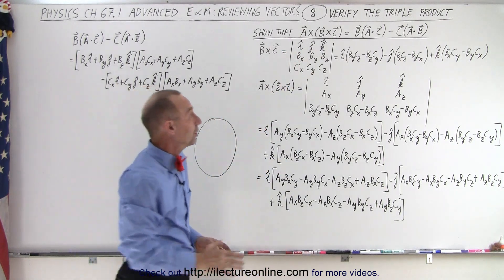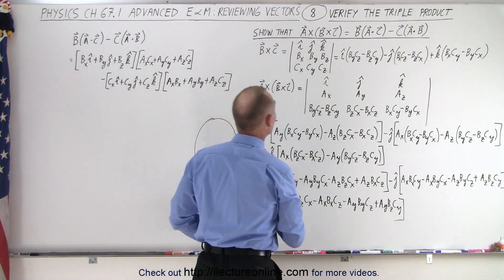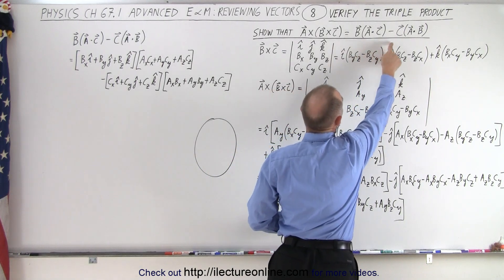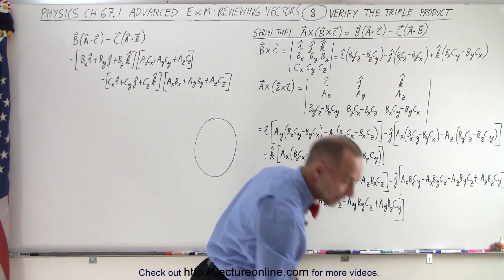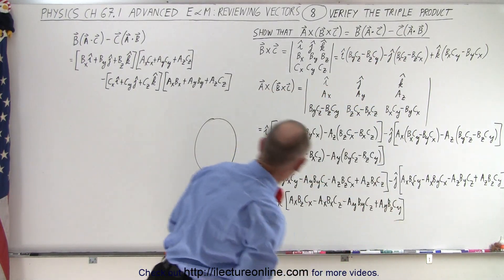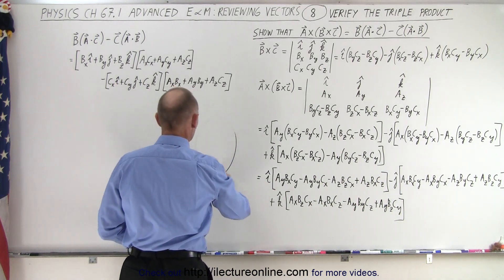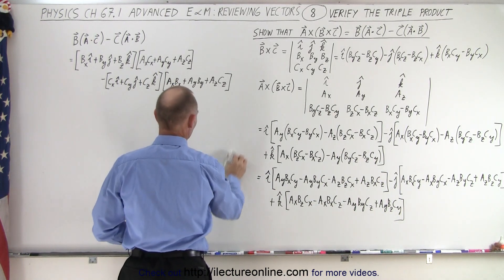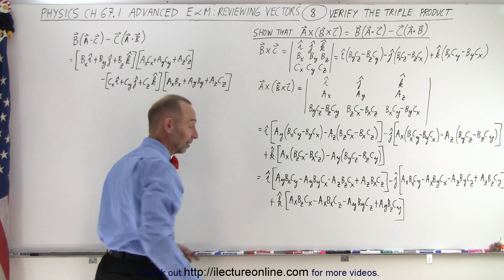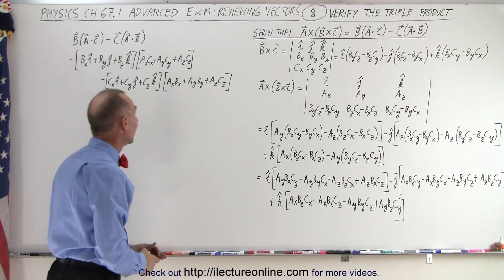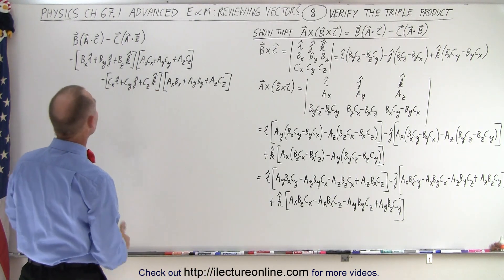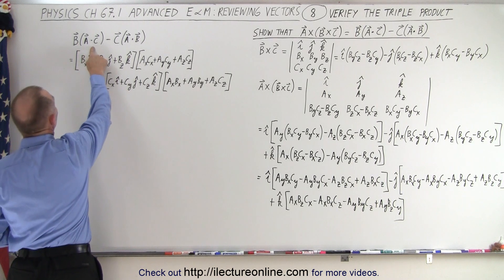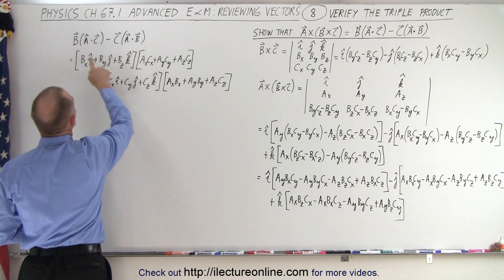Now we're trying to show that A cross B cross C is equal to B times A dot C minus C times A dot B. On the right side we start working out B times A dot C minus C times A dot B.